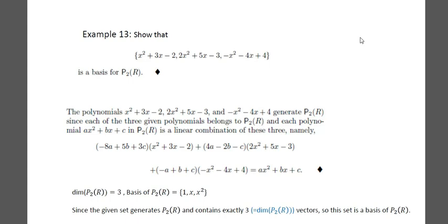Consider this example: you are given the set {x²+3x−2, 2x²+5x−3, −x²−4x+4}. You have to show this set is a basis for P2(ℝ). The standard basis for P2(ℝ) is {1, x, x²}, so the dimension is 3, and the given set also has 3 vectors. We show that any arbitrary element Ax²+Bx+C of P2(ℝ) can be expressed in terms of these polynomials, so these 3 vectors span P2(ℝ), and thus the set forms a basis.